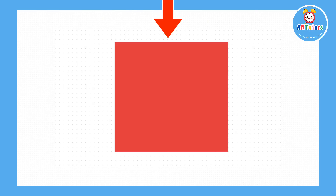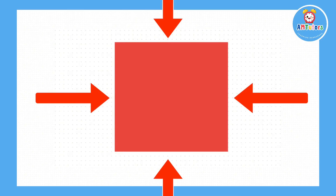If a square has four sides, how many edges do we say it has? We say that a square has four edges.